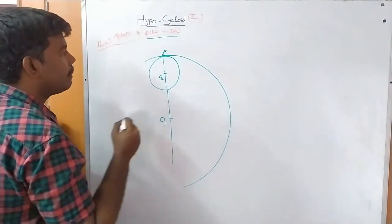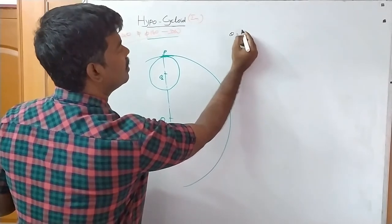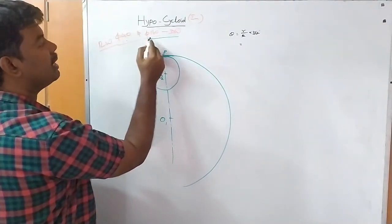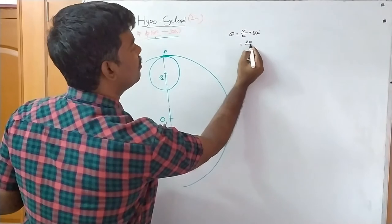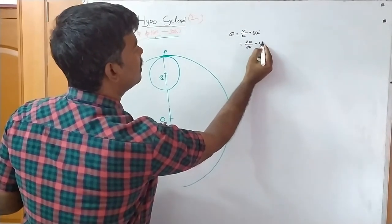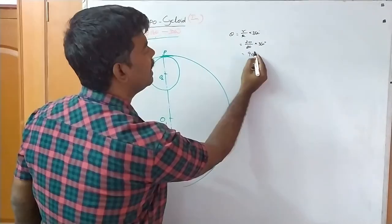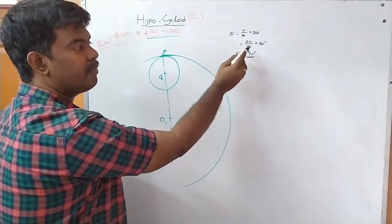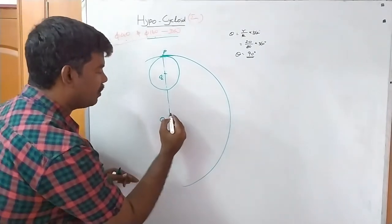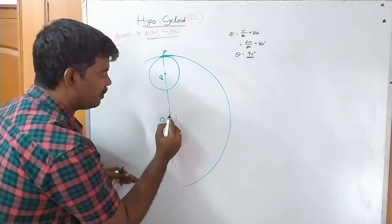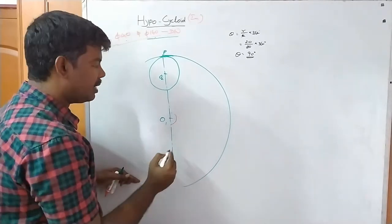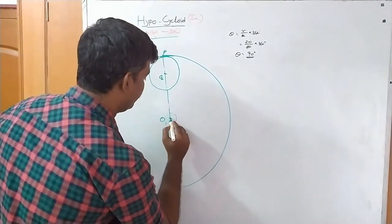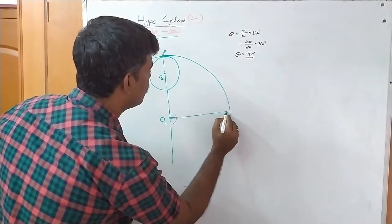The theta value equals small r divided by capital R, multiplied by 360. Small r is 20, capital R is 80, so 20 divided by 80 into 360 gives 90 degrees. Therefore theta is 90 degrees — that is, 1/4 into 360 equals 90 degrees. Place the protractor and mark 90 degrees from the 0 degree position.